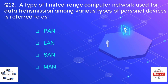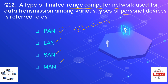Question number twelve: a type of limited range computer network used for data transmission among various types of personal devices is referred to as — options are PAN, LAN, SAN, and MAN. The correct option is PAN, or personal area network. Bluetooth is an example of a PAN, where we connect a smartphone to a laptop, typically limited to a range of below 100 meters.